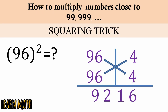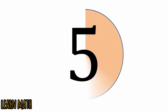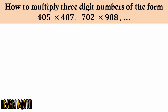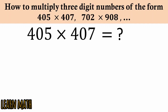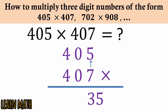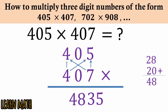The fifth trick is how to multiply three-digit numbers of this form. For example, 405 multiplied by 407: write 405 and 407. Multiply 5 with 7 to get 35. Then 7 with 4 is 28, and 4 with 5 is 20, giving 48. Write 48 here. And 4 into 4 is 16 — so 164835 is the answer.